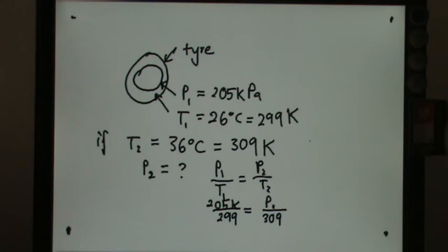So your final answer should have P2 equals 205 over 299 times 309. So your final value should be 212 kilopascals.